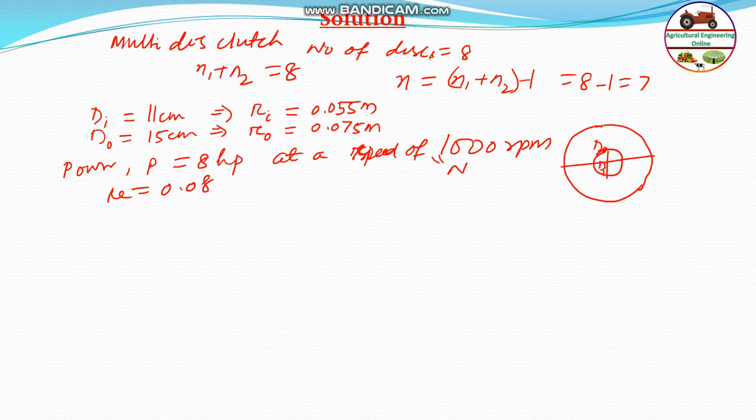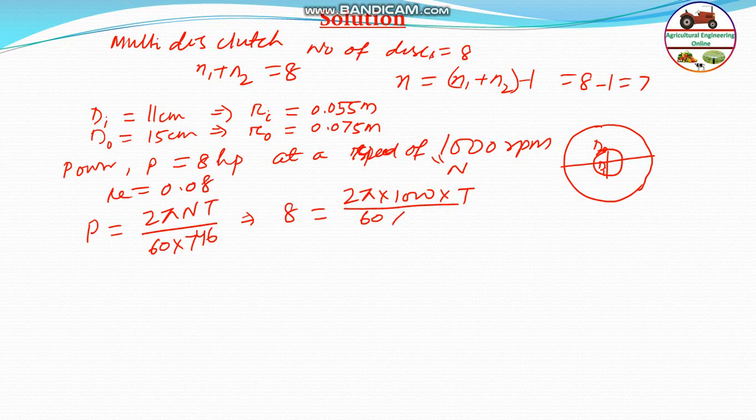First, we need to calculate the torque to be transmitted. Power = 2πnT/60, where n is in RPM and T is in Newton-meters. Since power is in horsepower, we divide by 746 for each HP. Therefore, 8 = (2π × 1000 × T)/(60 × 746), from which we get T = 56.99 N-m.